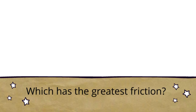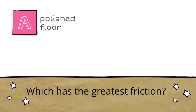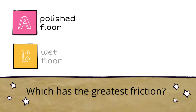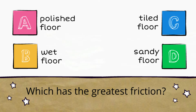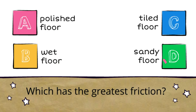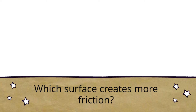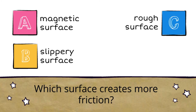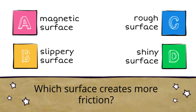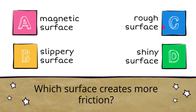Number two: which has the greatest friction? C. Rough surface. D. Shiny surface. The answer is C, rough surface.